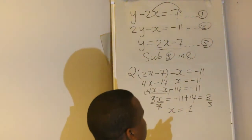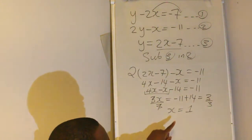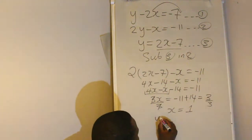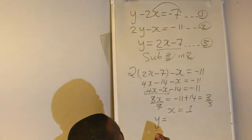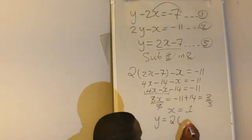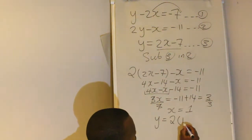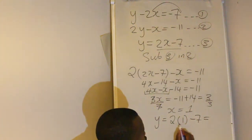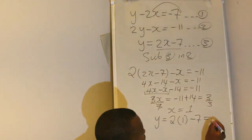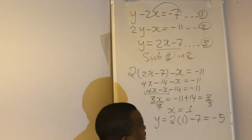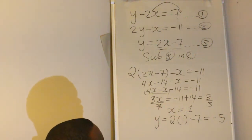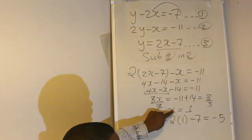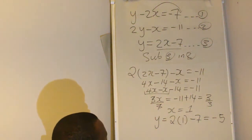Once you have x, it's easy to find y. Going back to the third equation: y equals 2x minus 7. Our x is 1, so y equals 2 times 1 minus 7, which equals 2 minus 7, giving y equals negative 5.